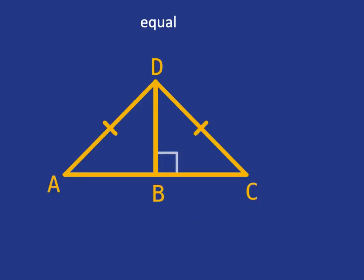How do we indicate two lines are equal? We put these little dashes on the line like that and we write that AD is equal to DC.